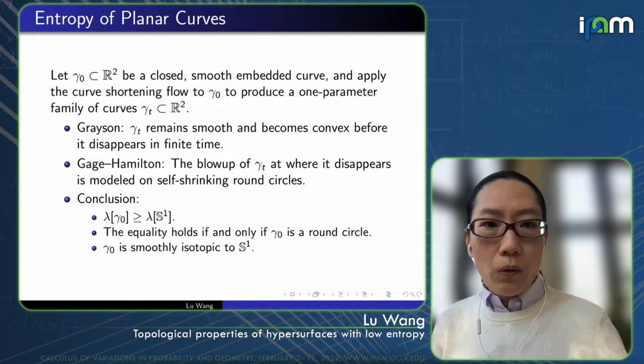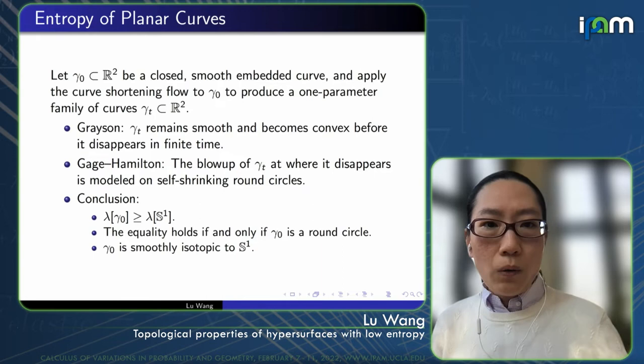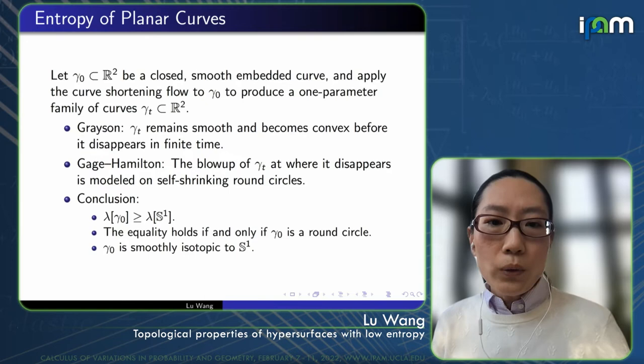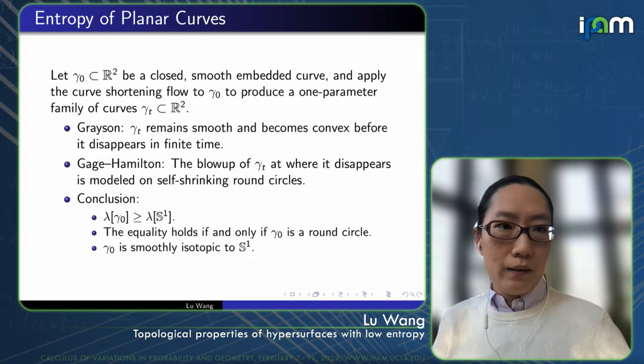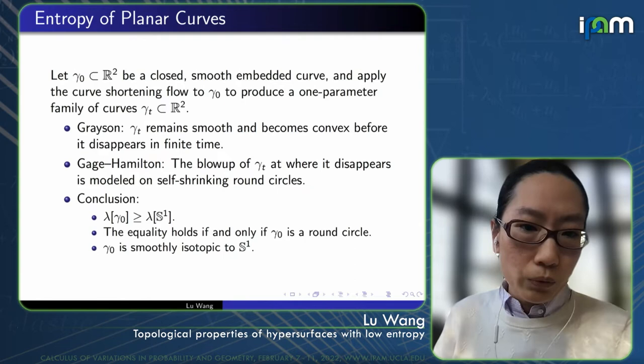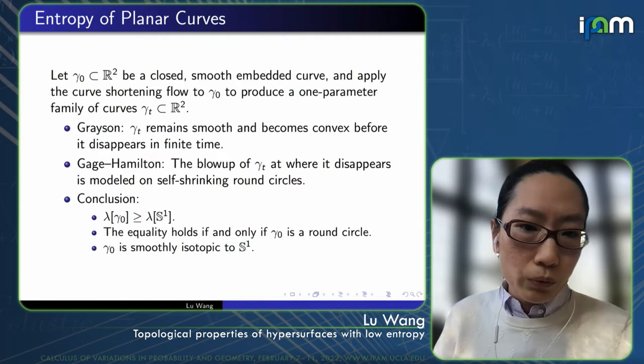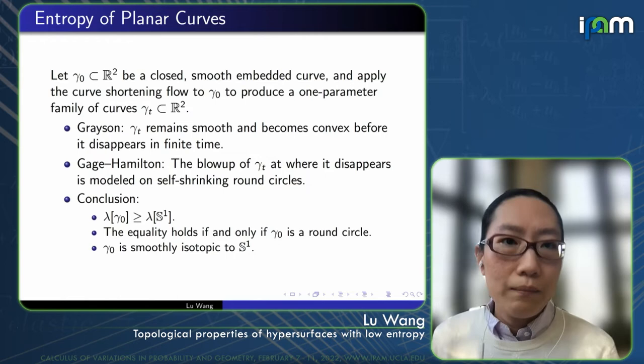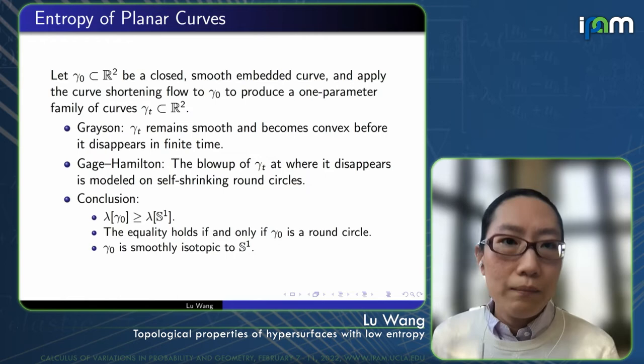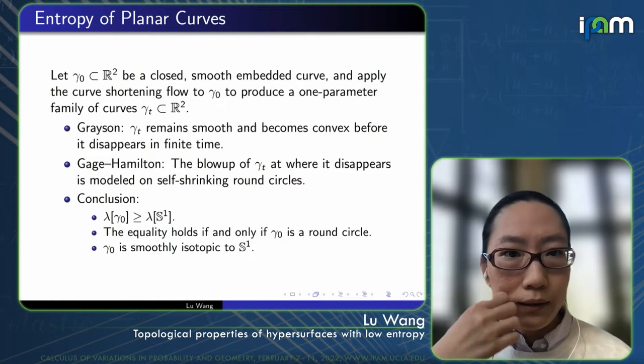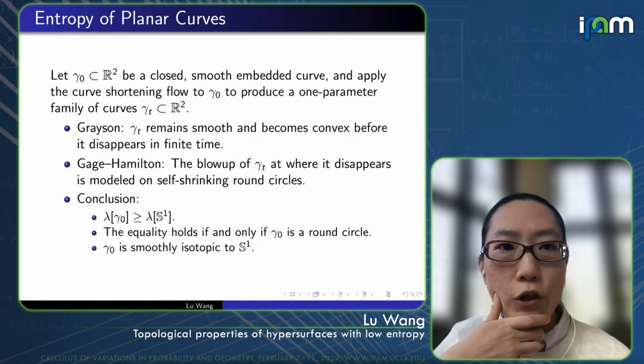Furthermore, this process also helps provide a nice, natural, smooth isotopy between the initial closed curve γ_0 and the round circle, meaning that you can actually deform in a smooth way through smooth closed embedded curves to the round circle. This is a nice application of mean curvature flow theory to obtain a sharp lower bound on entropy of a curve in the plane.